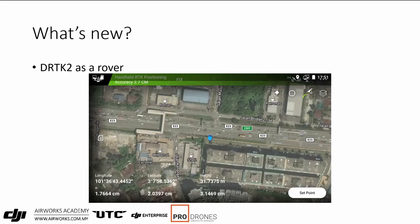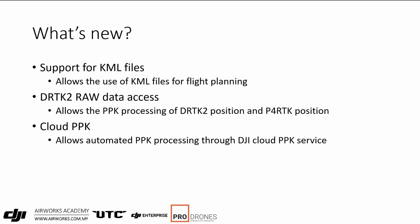With the DRTK2 as a rover you can measure points — longitude, latitude, and height — with the error noted. You don't have to carry a separate GNSS mapping module and the DRTK2 and the drone when you go out to work. KML file support means you can pre-draw your area in GIS software or Google Maps, export it, and import it into the remote. This helps with complex area boundaries, reduces dragging on the remote, and reduces the chance of missing areas.